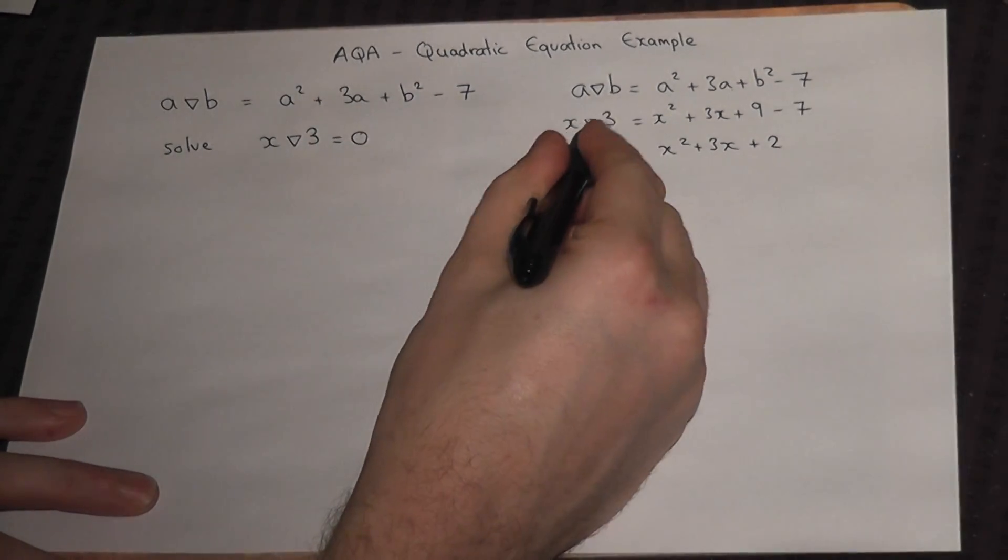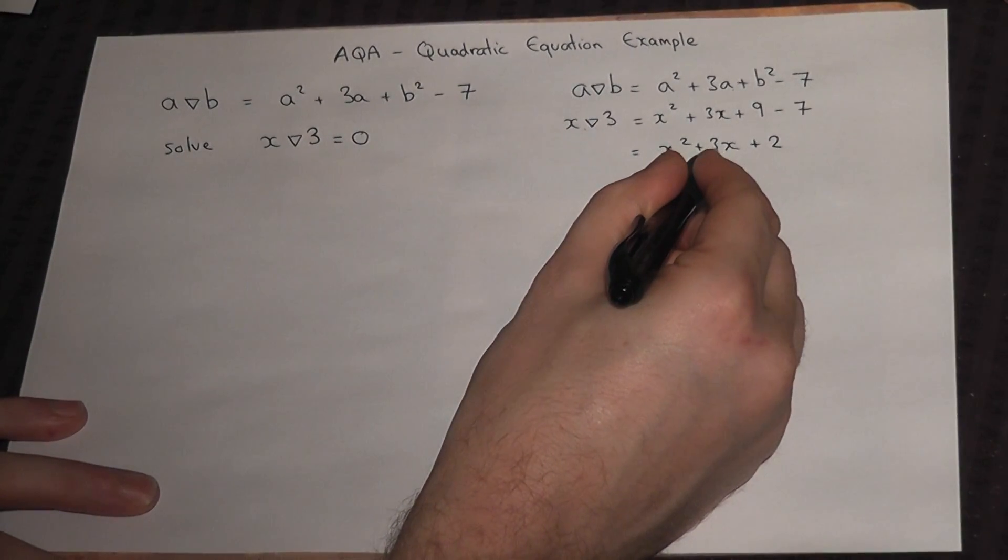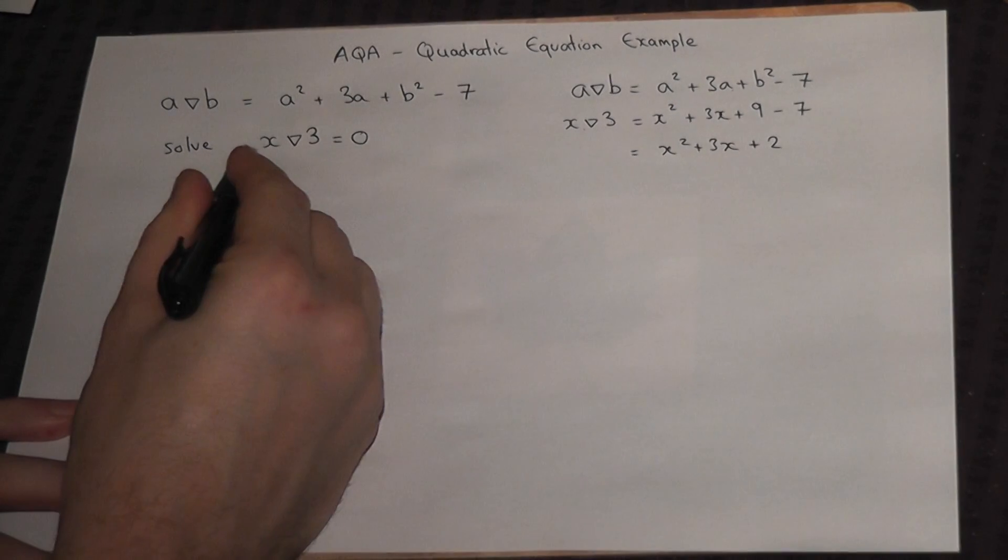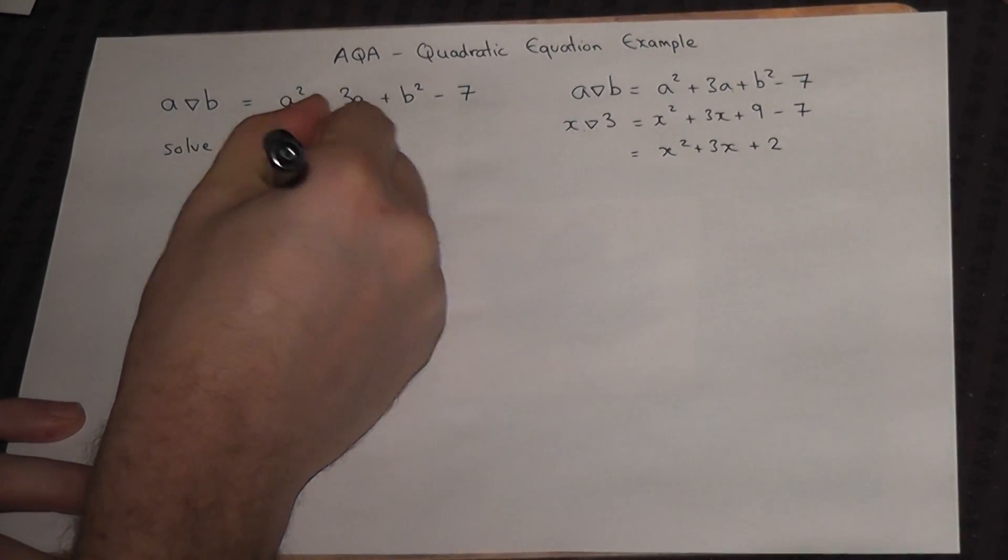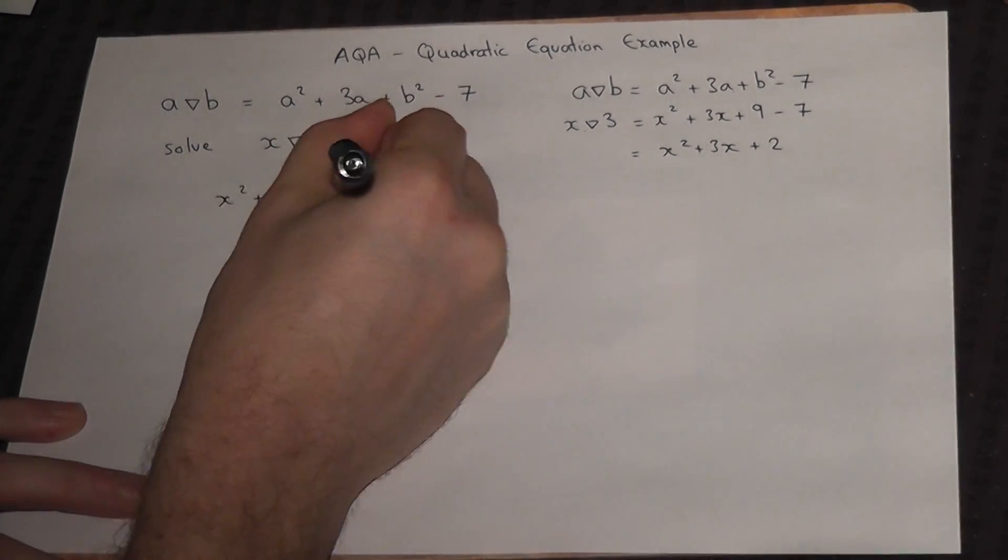So x operator 3 equals x squared plus 3x plus 2. So to solve this equation is the same as x squared plus 3x plus 2 equals 0.